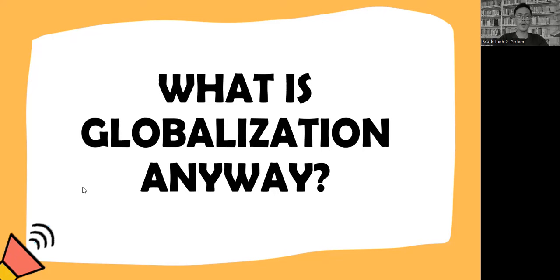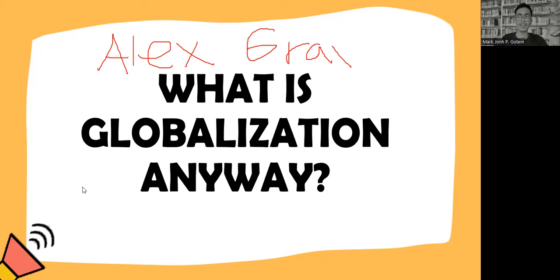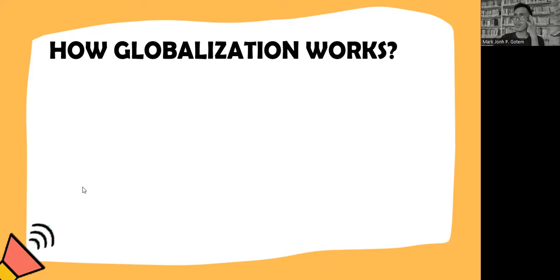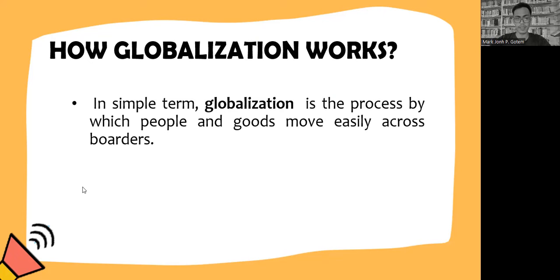Here we look at an article titled 'What is Globalization, in a Way?' by Alex Gray, written in 2017. How does globalization work? In simple terms, globalization is a process by which people and goods move easily across borders. Globalization has brought many benefits to many people, but not to everyone. Because globalization is an economic concept — the integration of markets, trade, and investment — with fewer barriers to deliver products to other nations.